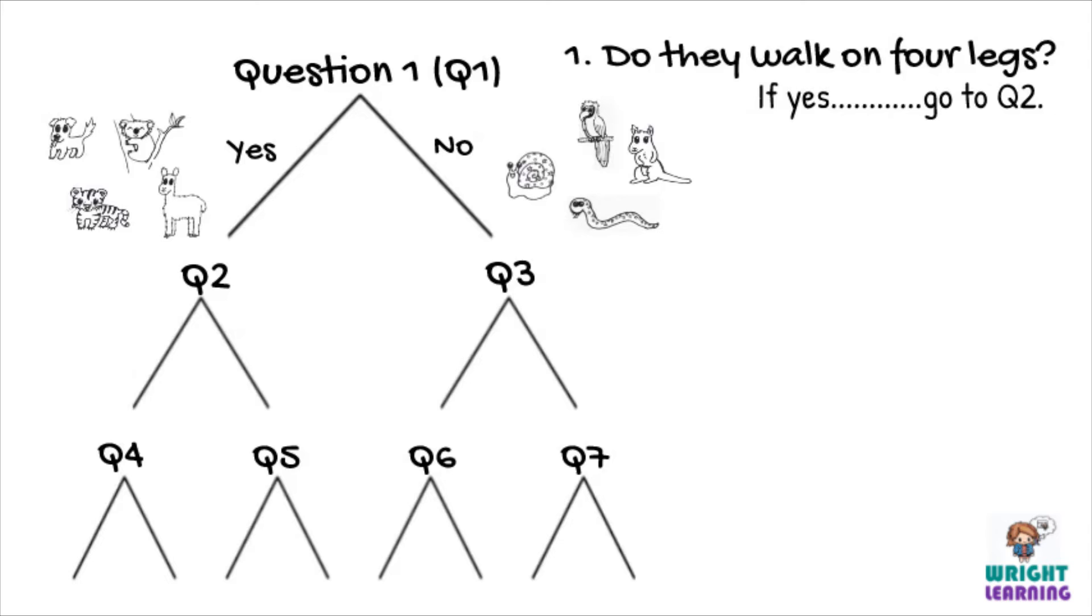In contrast, you can see that the branch of the tree diagram for organisms that do not walk on four legs links to question 3. So we write, if no, go to question 3.